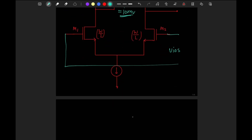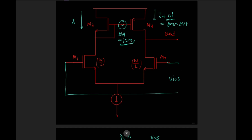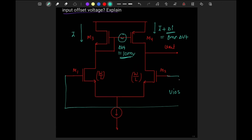The input referred offset voltage is: without any input we get an output voltage, and when we divide this output offset voltage by the gain of the amplifier, we get the input referred offset voltage. Basically, this input offset voltage will create a current that will nullify the mismatch current. So without any input we are getting an output voltage, and we will apply a small differential input voltage that will nullify this current.